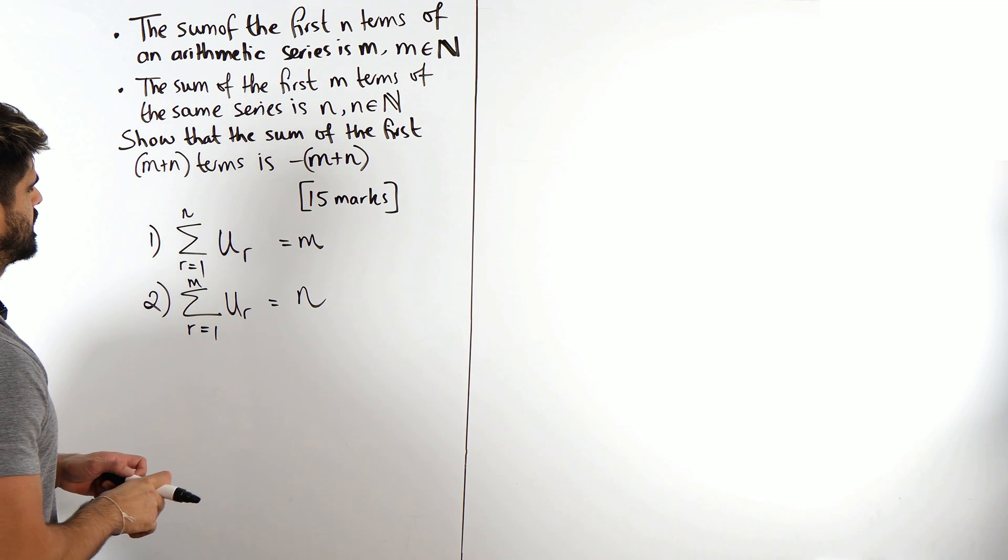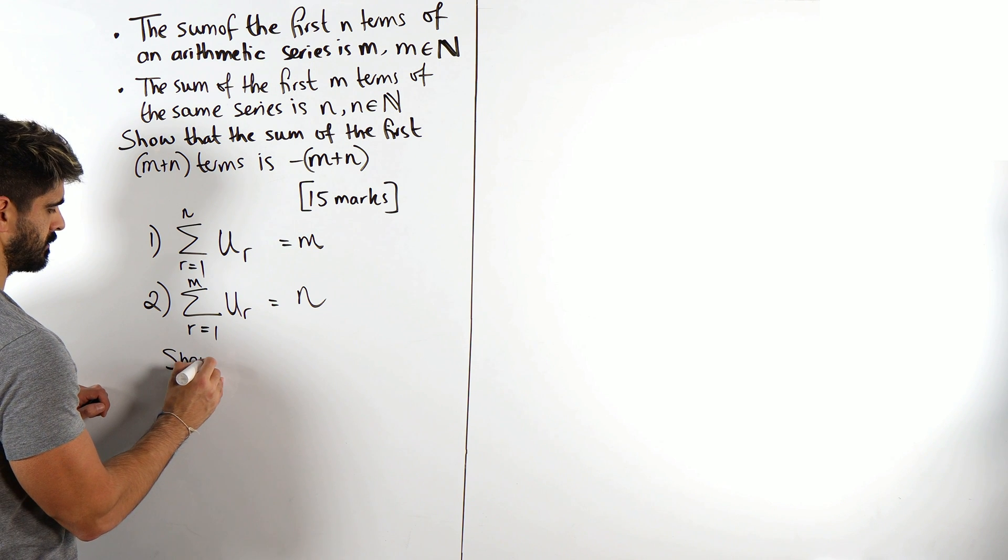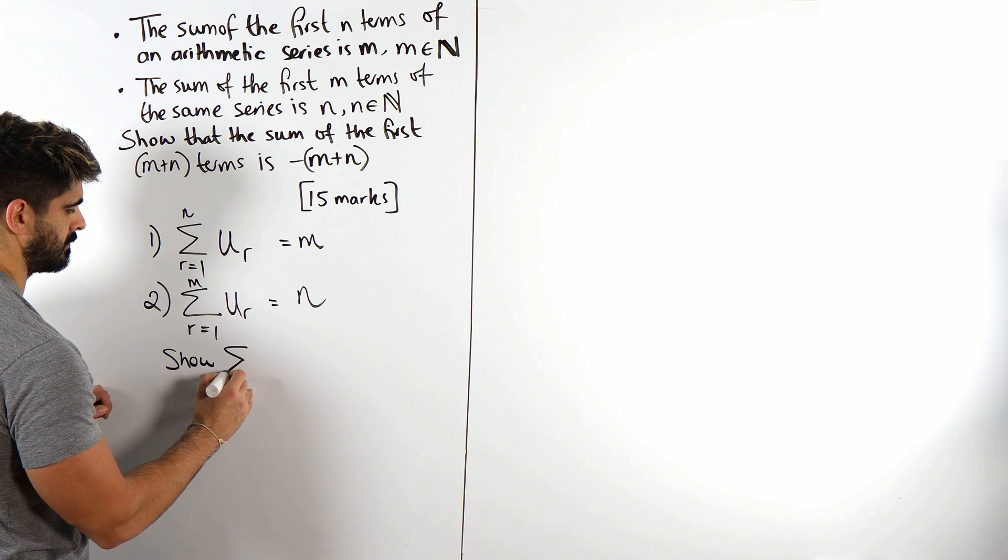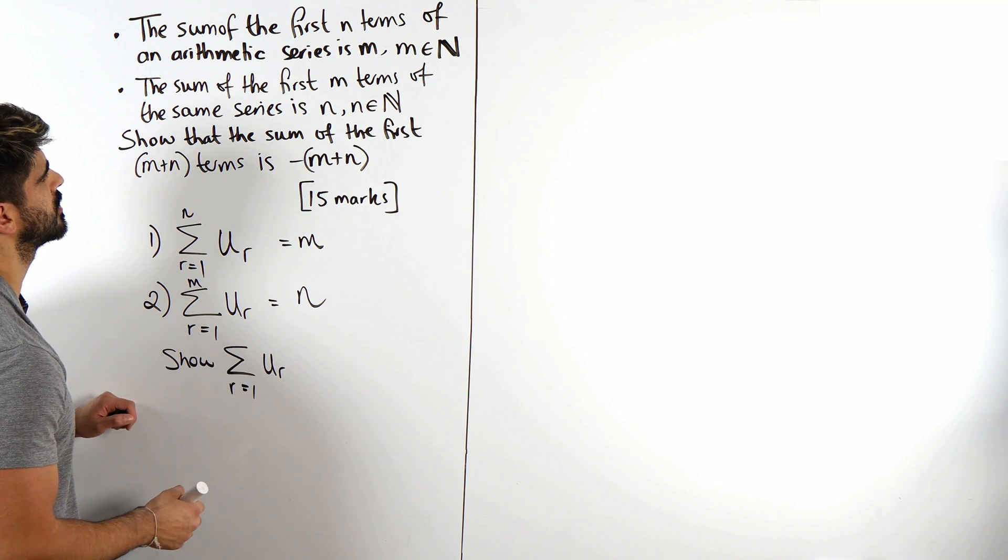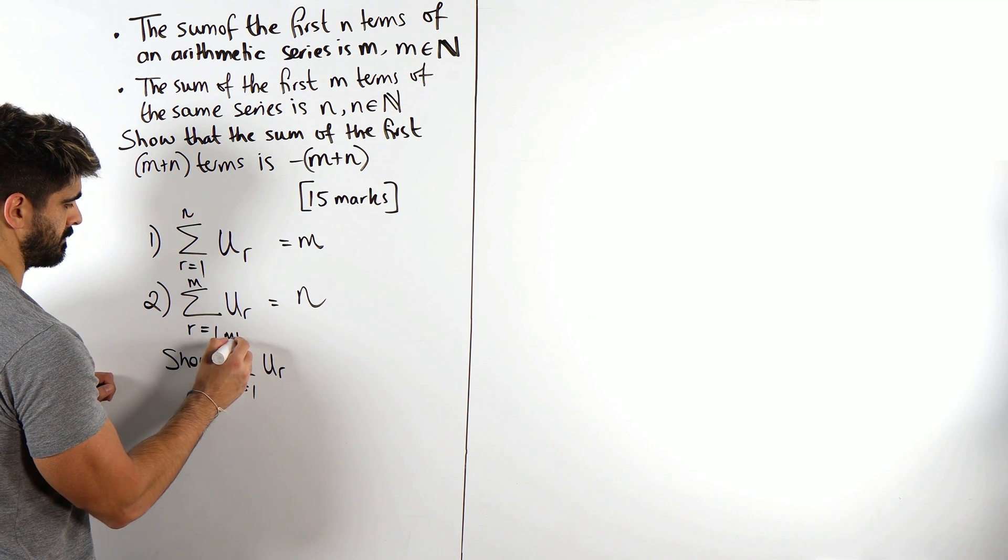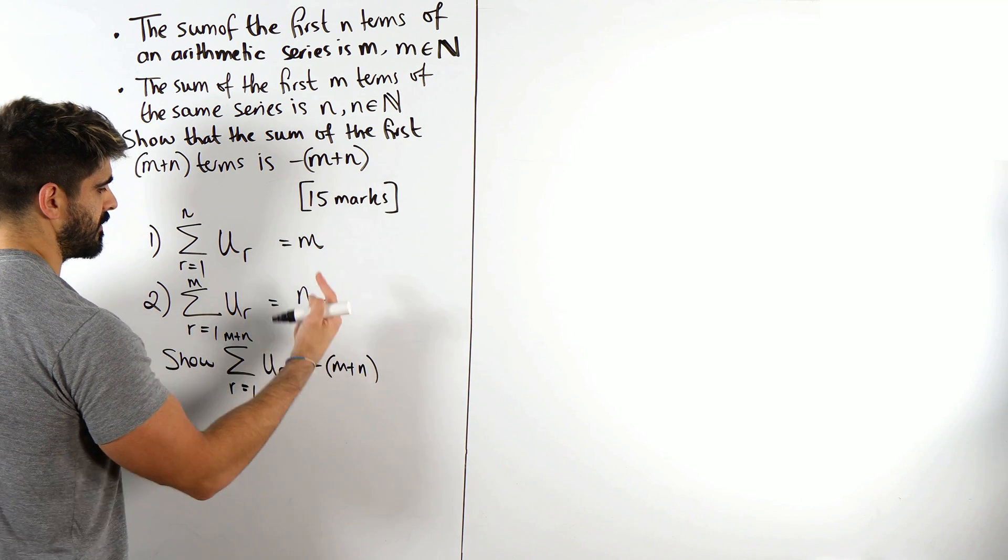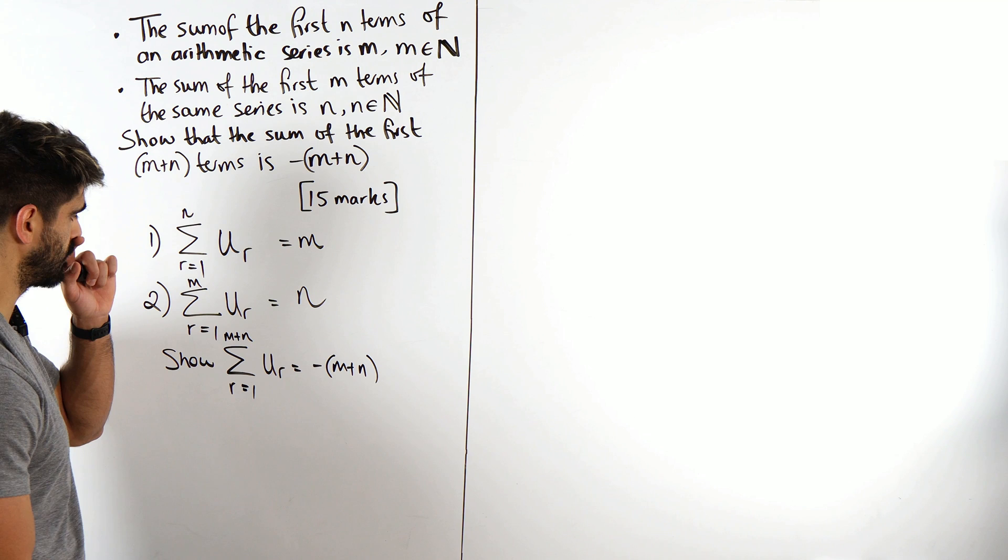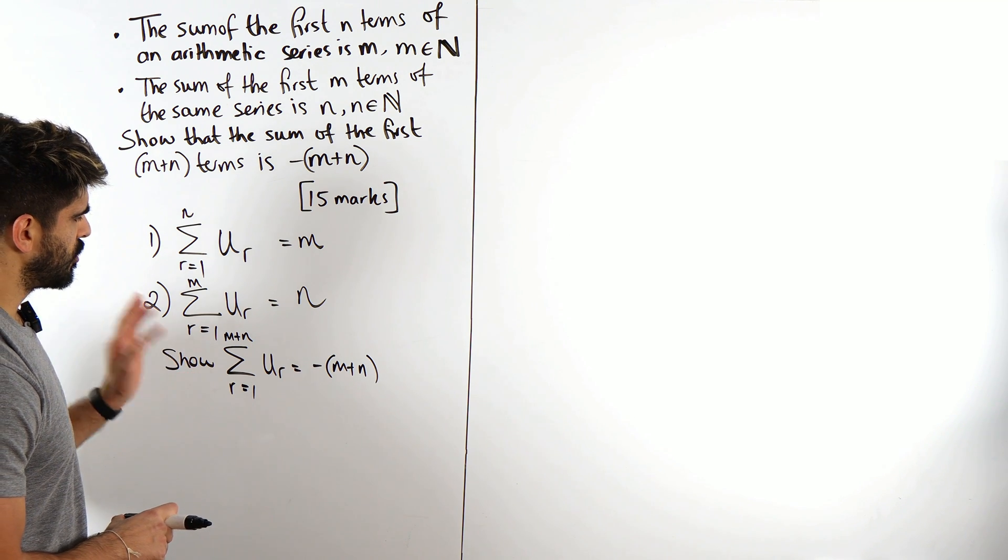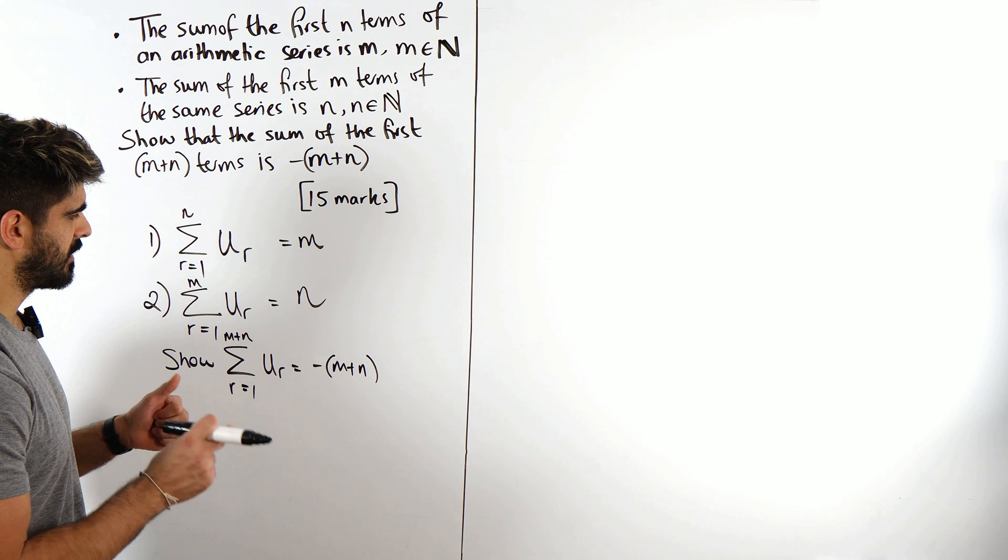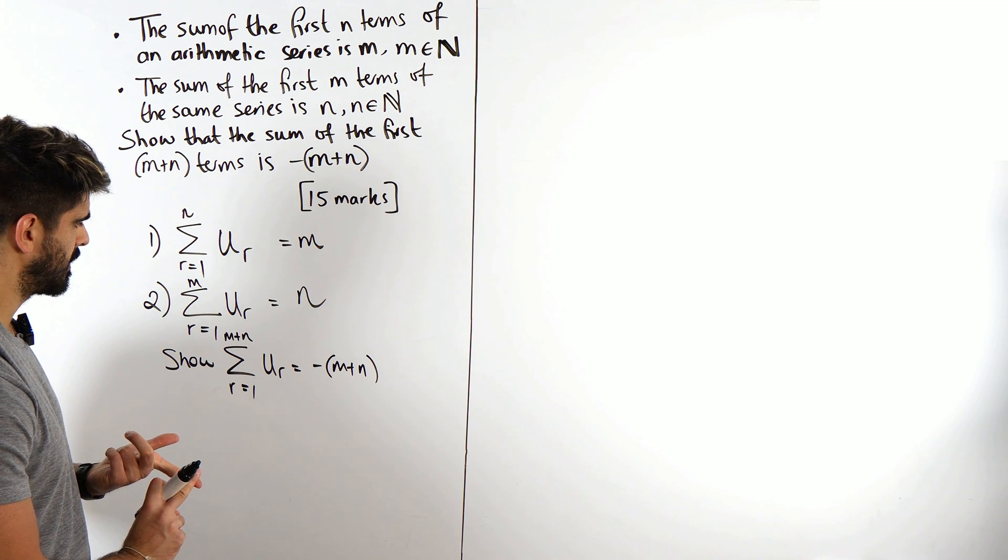And then the second one, they're saying the sum from r equals 1 of the same sequence for m terms is n. They want us to show that the sum from r equals 1 of the same sequence of m plus n terms is the negative of m plus n.